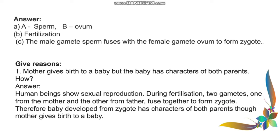Give reasons: Mother gives birth to a baby but the baby has characters of both parents. How? The answer is: Human beings show sexual reproduction. During fertilization, two gametes — one from the mother and one from the father — fuse together to form a zygote. Therefore, the baby developed from the zygote has characters of both parents, though the mother gives birth to the baby.